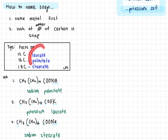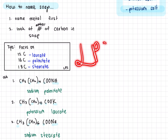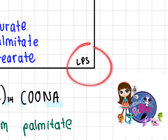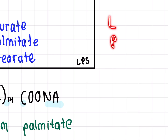To memorize laurate, palmitate, and stearate, just repeat it around 5 times. I also use the mnemonic LPS — which stands for Littlest Pet Shop — and it goes in order from the least carbon to the most amount of carbon: L for laurate, P for palmitate, S for stearate.